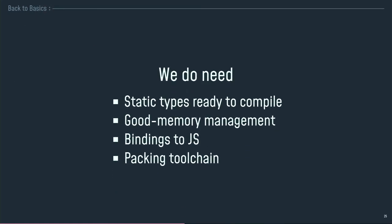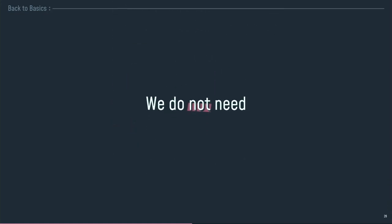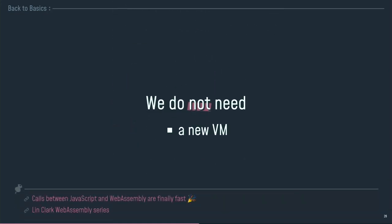What do we really need? We need a language with static types that is ready to compile to the web. We need really good memory management, because we've got memory to handle and manage. We need bindings to JavaScript, because I want to exchange data between my JavaScript module and my WebAssembly module. And we need a packing tool, because I don't want to do it by myself. What we do not need is a new virtual machine, because we already have one — the JavaScript virtual machine — and it's a pretty good one. It runs in every browser, and having the same virtual machine run both JavaScript and WebAssembly code allows really fast operations when exchanging data between modules.